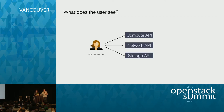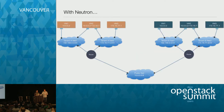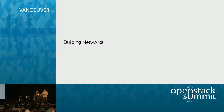The APIs are generic. From the user's perspective they still see the compute API, the network API, and the storage API. With Neutron we can create basic and rich topologies within OpenStack.